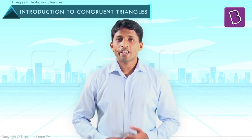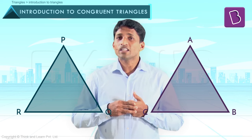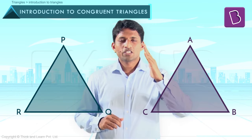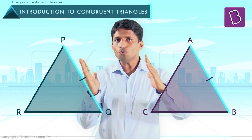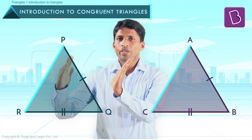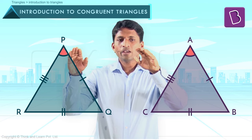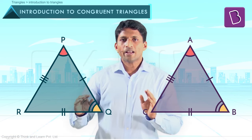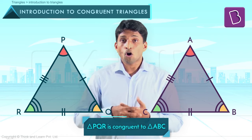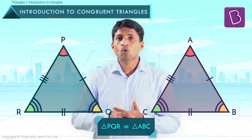If triangle ABC and PQR are congruent, this means the corresponding sides are equal and the corresponding angles are equal. That is: side AB = PQ, BC = QR, and AC = PR. The corresponding angles are also equal: angle A = angle P, angle B = angle Q, and angle C = angle R. So that's the meaning of congruency — six parts, that is three sides and three angles, will be equal: three equal pairs of sides and three equal pairs of angles.